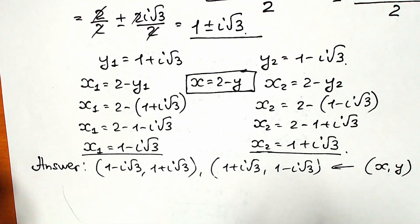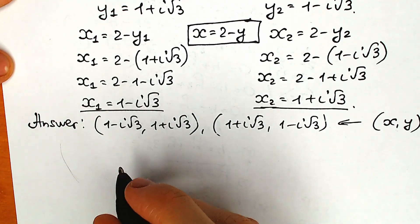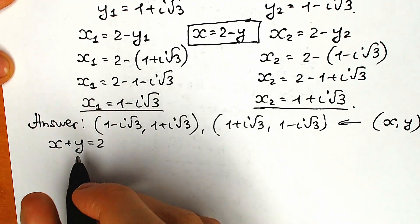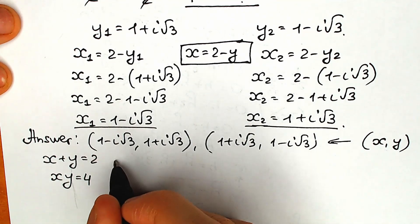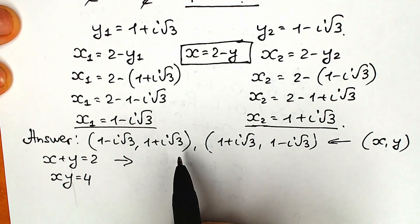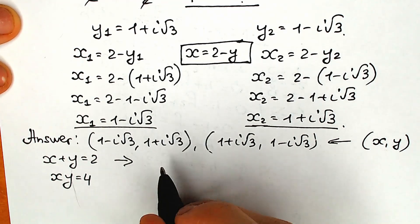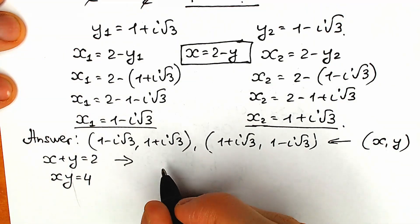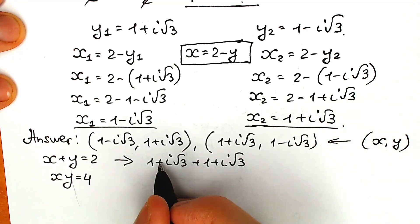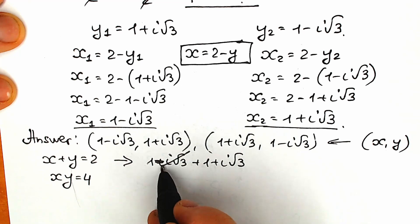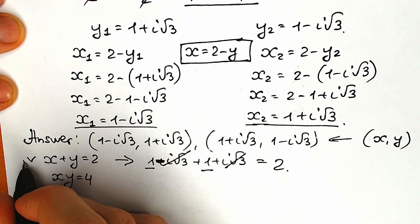Now let's verify. Rewriting our original system: x plus y equals 2 and xy equals 4. Let's check addition with the first pair: (1 plus i square root of 3) plus (1 minus i square root of 3) equals 1 plus 1 equals 2. Addition works perfectly.